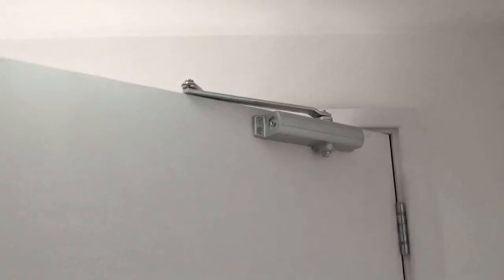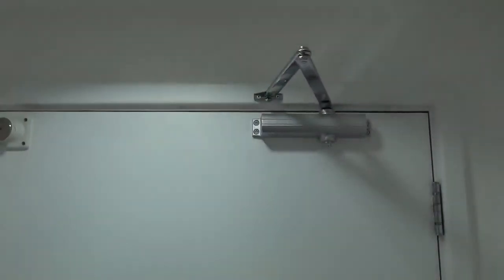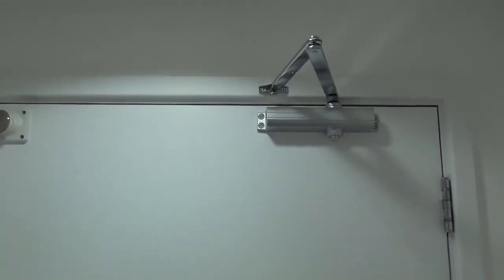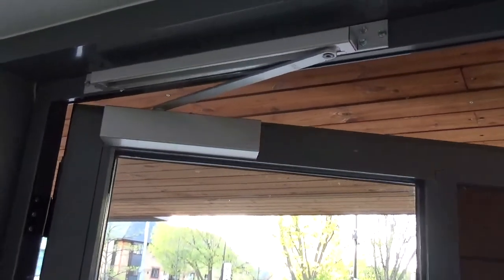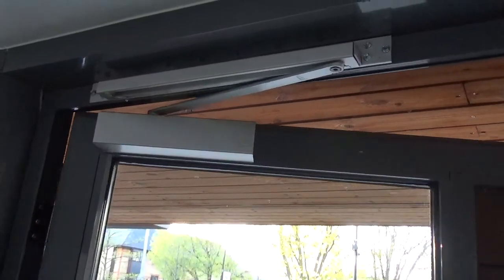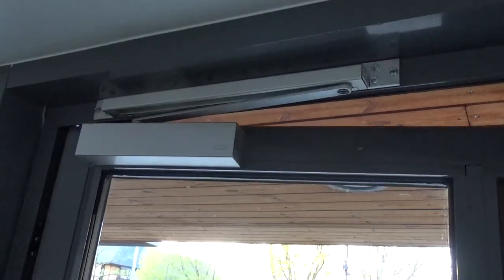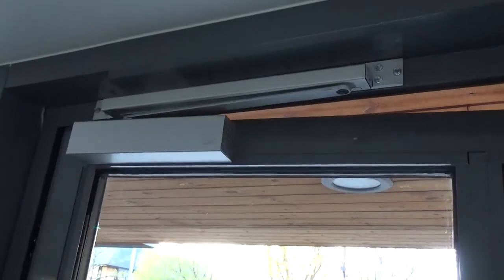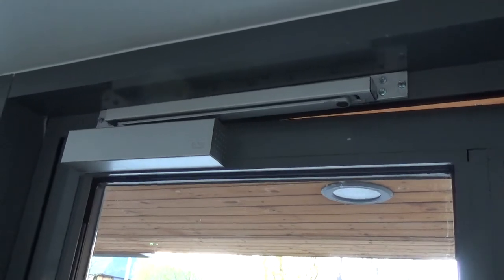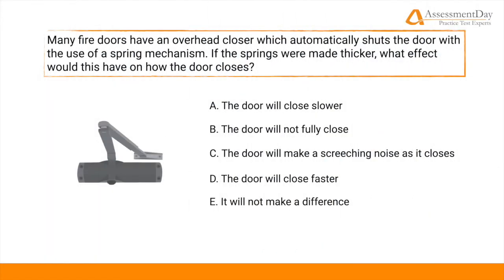Just like in the previous example, the resistant force in the spring is being used to close the door. The heavier the door, the thicker the spring. In other words, the thicker the spring, the more force that is applied. Now we've learned that thicker springs means greater force. Returning to our question, we can determine that this greater force as it pulls the door will make the door close faster.